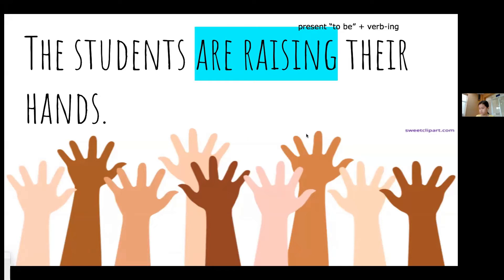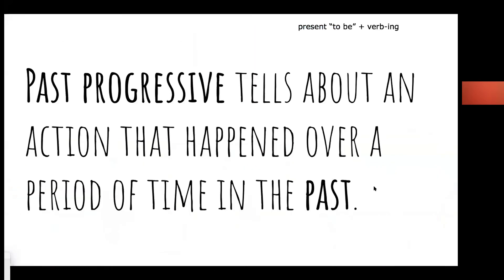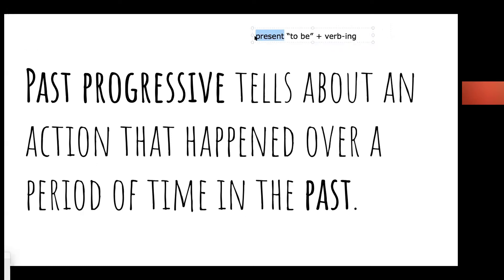Another example: 'The students are raising their hands.' The present progressive verb is 'are raising' — 'are' is our form of 'be,' and 'raising' is our verb with the '-ing' ending. Now we're going to add more: the past progressive tells about an action that happened over a period of time in the past.